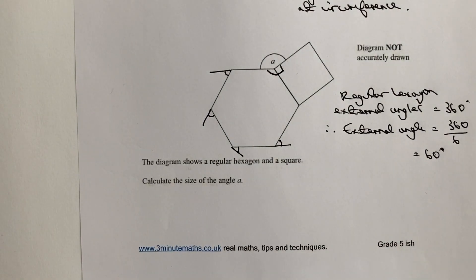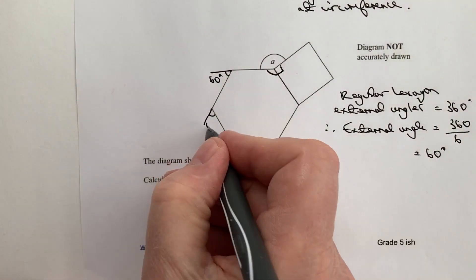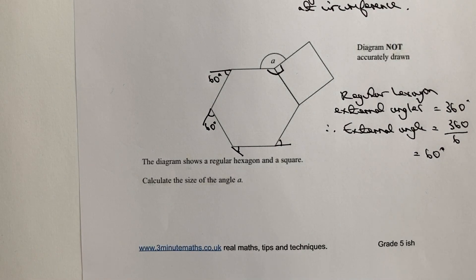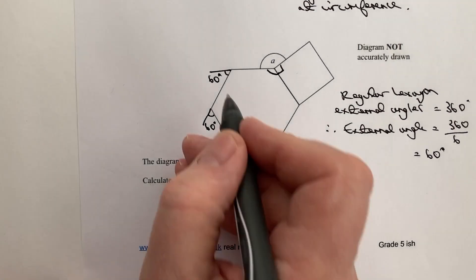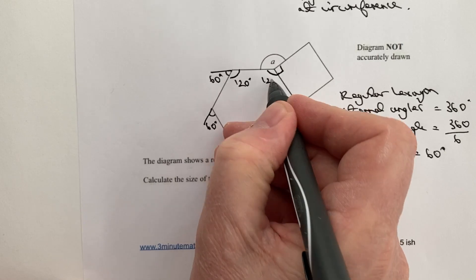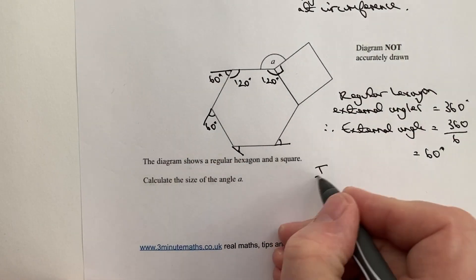So in other words what we're saying is that for every single external angle here, all of them are going to be 60 degrees, which allows me then to work out the internal angle because it's a straight line. So this here is going to be 120 degrees and it's the same for this one and the same for all the others as well, that the internal angle equals 120 degrees.